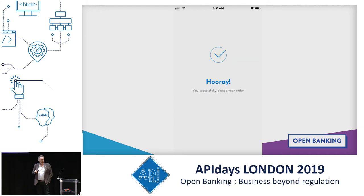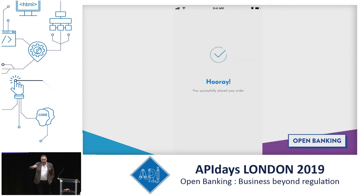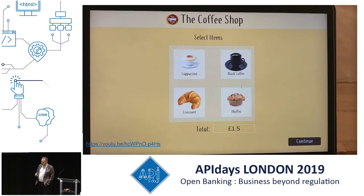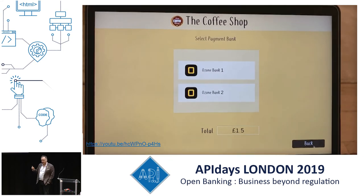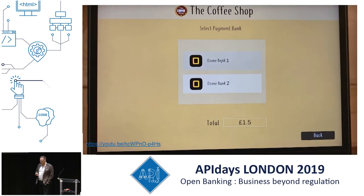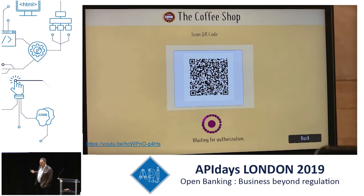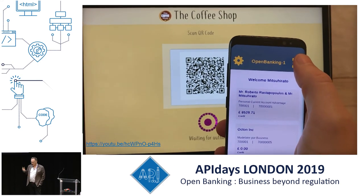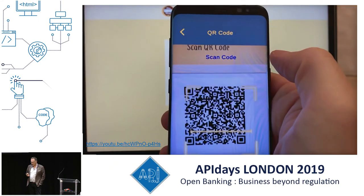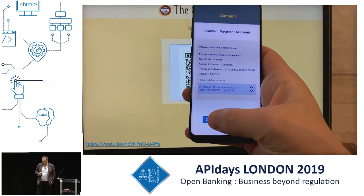It doesn't work for all scenarios — wouldn't work at a point of sale or if you're trying to authenticate on a desktop. So what we've worked on with the OpenID Foundation is the CIBA — Client Initiation Back-Channel Authentication — profile, which is a decoupled profile. This allows a number of different models. This example using Ozone is actually slowed down so you can see what's going on: in a kiosk you're selecting some coffee, you click continue, you choose your bank, you're presented a QR code, you scan it in your mobile banking app, optionally select an account, confirm, and the payment is made.